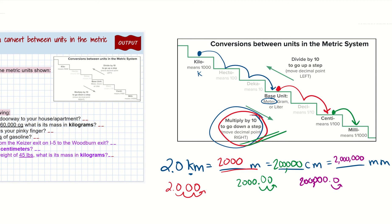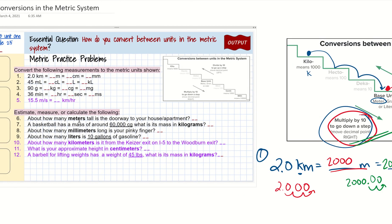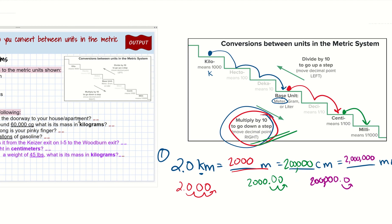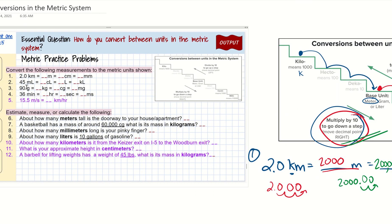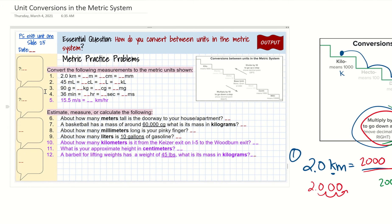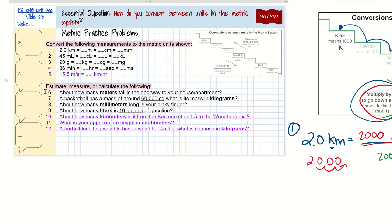Hopefully that helps you see how to use the conversion chart. You have questions two and three to practice with. Question four is a little different because you're working with minutes and need to convert to hours and seconds — and for most of that problem we don't even need the chart, because we have to use what we know about time. Time isn't base-10: there are 60 minutes in an hour and 60 seconds in a minute.